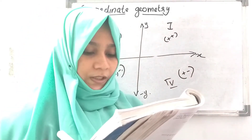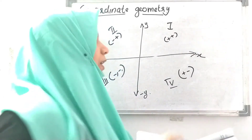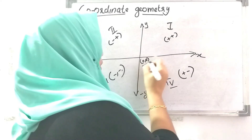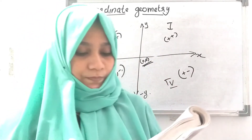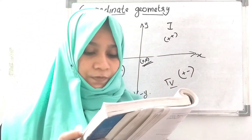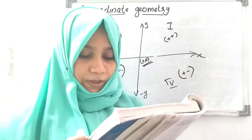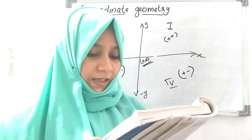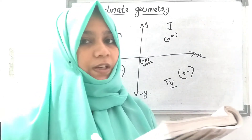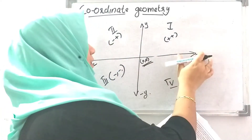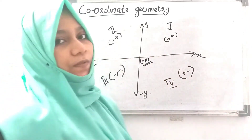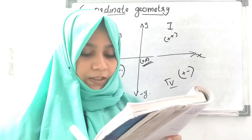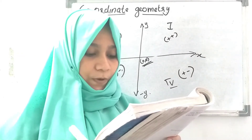The point of intersection of the axes is called the origin. The x and y values are called the coordinates of the point.